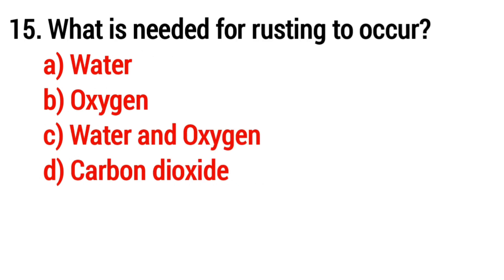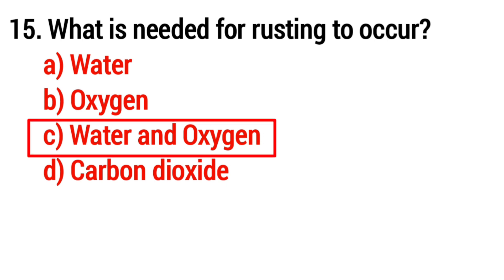Question 15: What is needed for rusting to occur? The answer is Option C: water and oxygen.